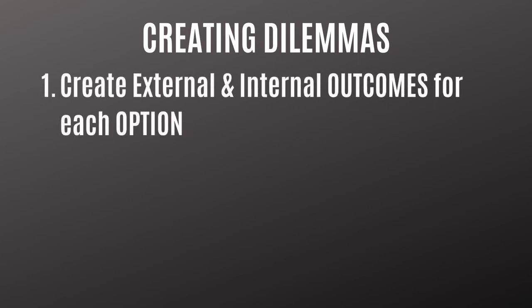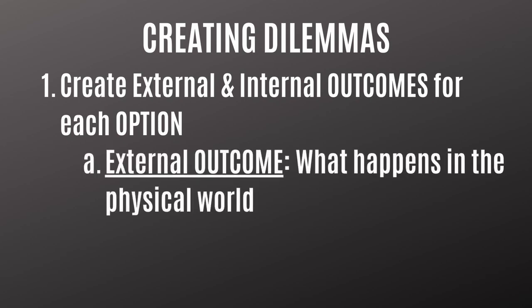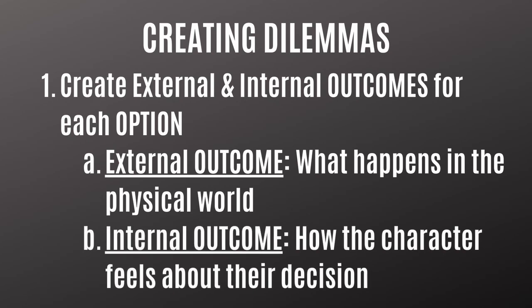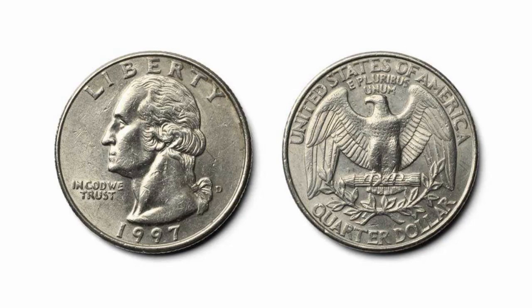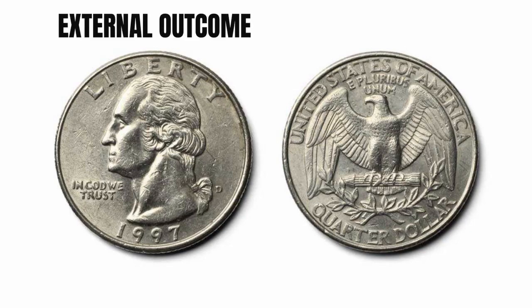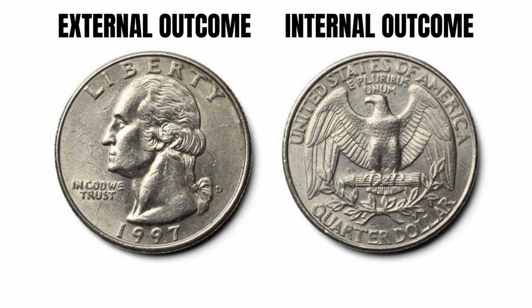Step one is you need to consider the external and internal outcomes of each option. With external, we mean what happens in the physical world — what happens outside of the character as well as what happens to the character themselves. With internal, we're talking about how a character feels about the decision they make, or how they will feel if they choose one option or the other. You can think of each option as a two-sided coin: one side is the external, the other side is the internal, and each option should have both.